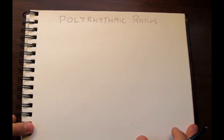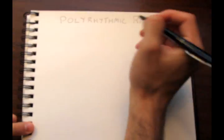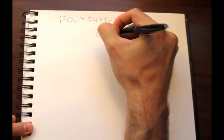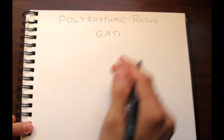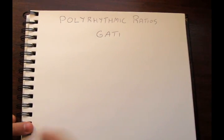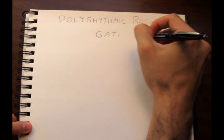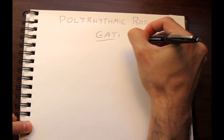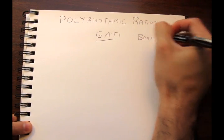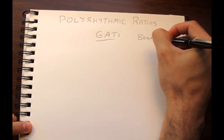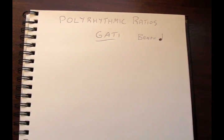The first thing we want to do is equally subdivide the beat. This concept is called gati. A gati is a different equal subdivision of the beat, and our beat is going to be defined by one quarter note in this example, although it can be defined as a half note or a whole note. Our beat will also be defined by the metronome.